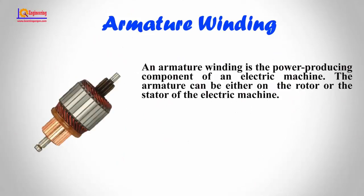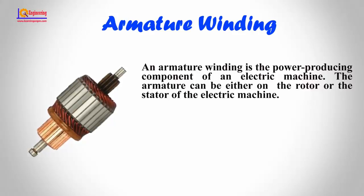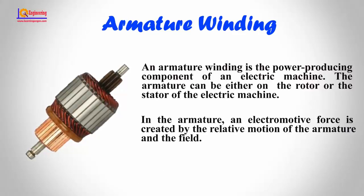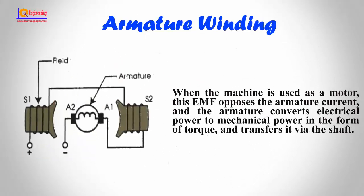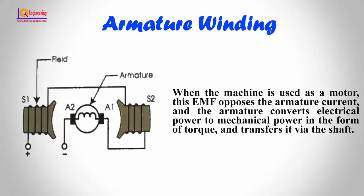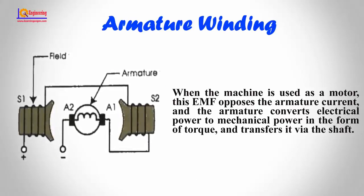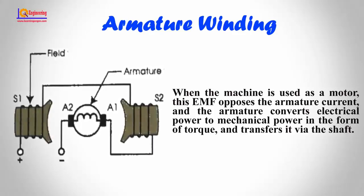An armature winding is the power-producing component of the electric machine. The armature can be either on the rotor or the stator of the electric machine. In the armature, an electromotive force is created by the relative motion of the armature and the field. When the machine is used as a motor, this EMF opposes the armature current, and the armature converts electrical power to mechanical power in the form of torque and transfers it via the shaft.